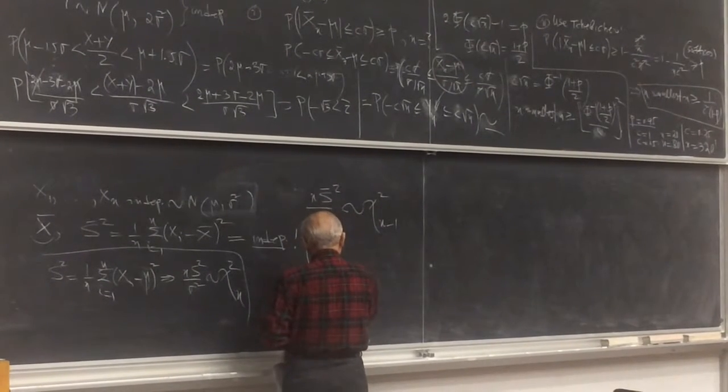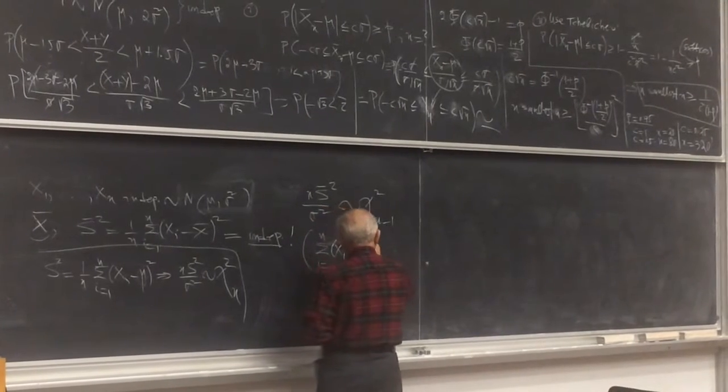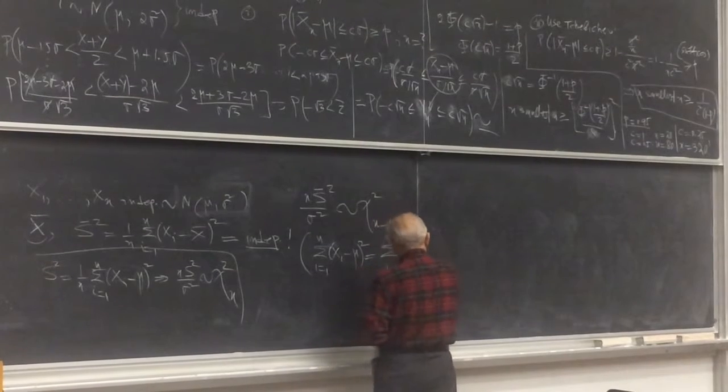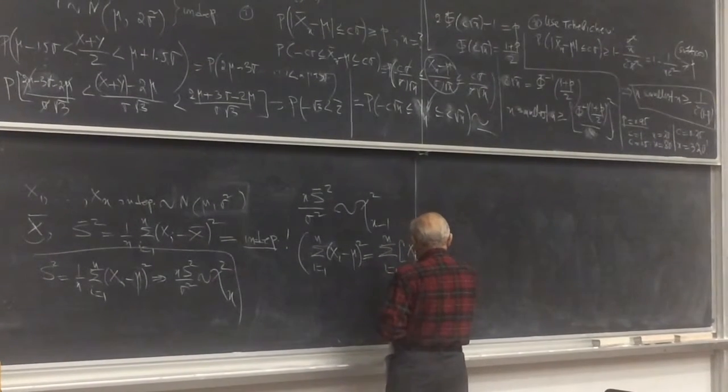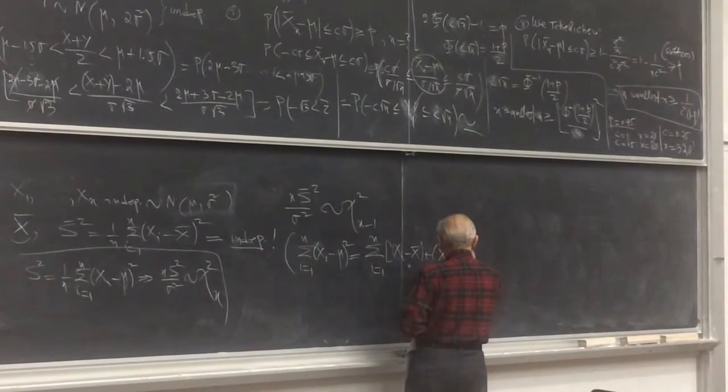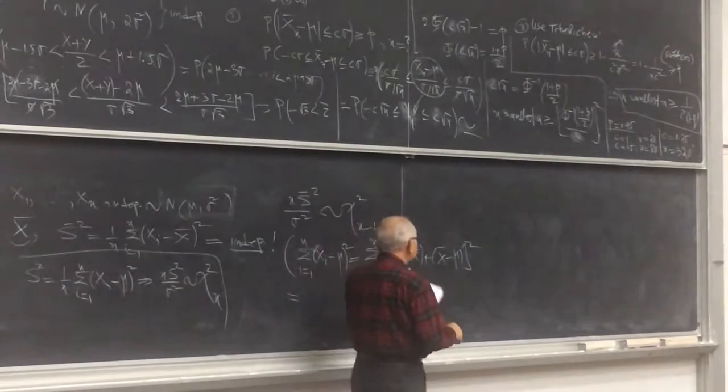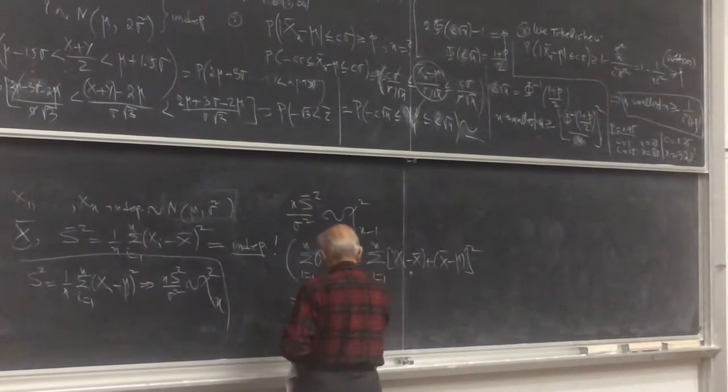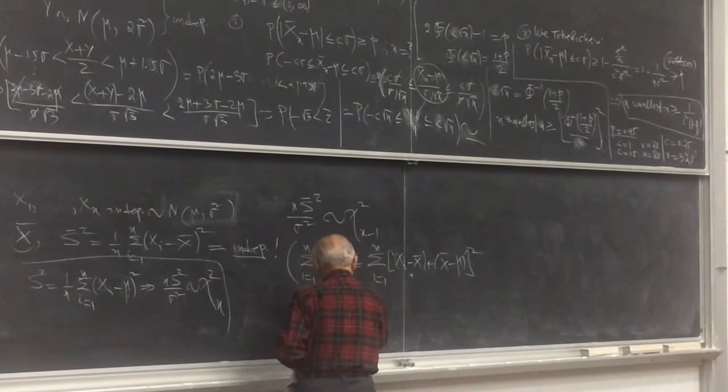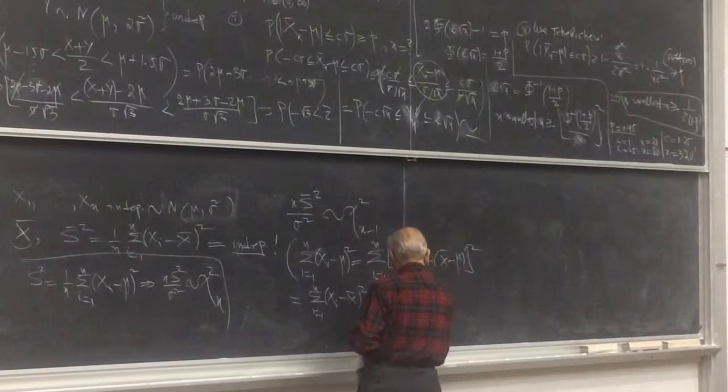If you look at the sum from 1 to n of xi minus mu squared, this you can derive as follows. xi minus x-bar plus x-bar minus mu, the whole squared. Now square it out and sum up. When you do that you get sum from 1 to n of xi minus x-bar squared, plus n times x-bar minus mu squared, plus twice the product.